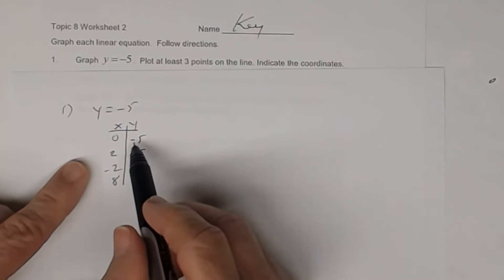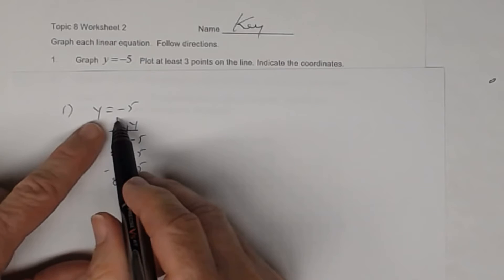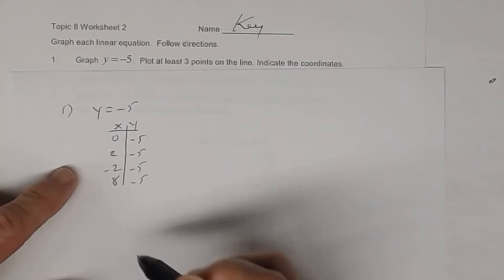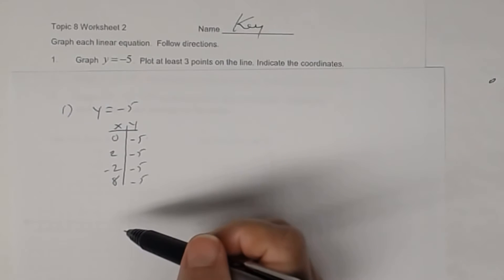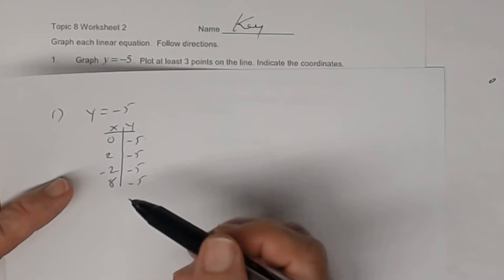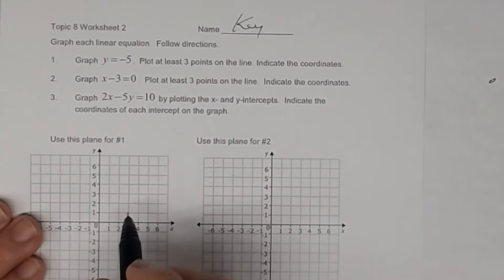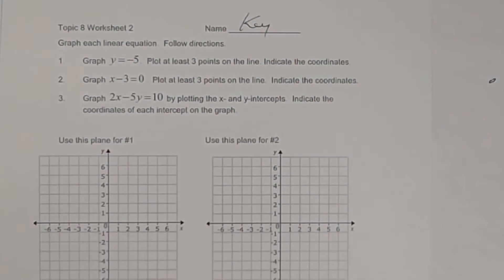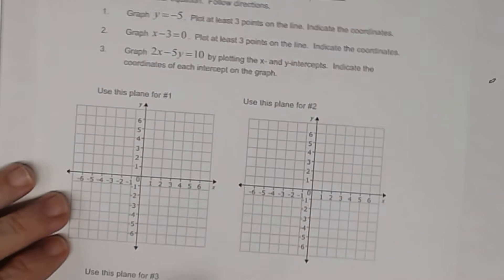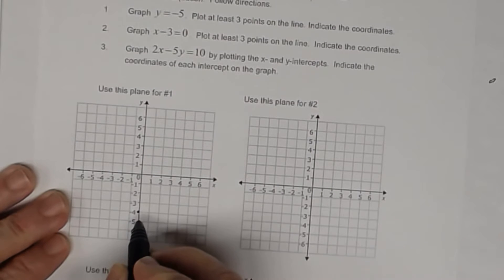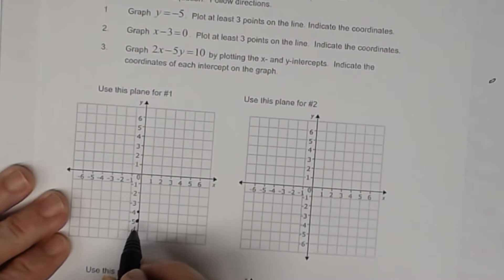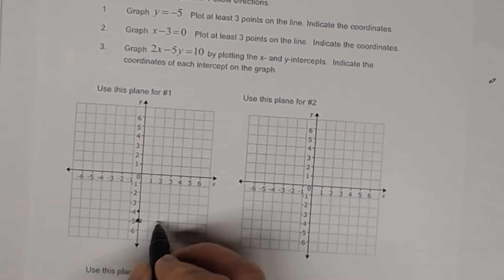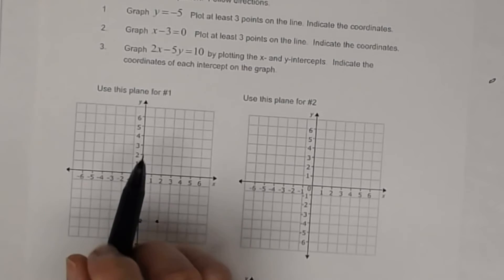So these are solutions to that equation — y always equals negative 5 no matter what x is. So if I were to plot those points on the coordinate plane, here's the graph for number 1. You have (0, -5) here, (2, -5) right here, and (-2, -5). Notice it says plot 3 points, so I'm just going to do 3.